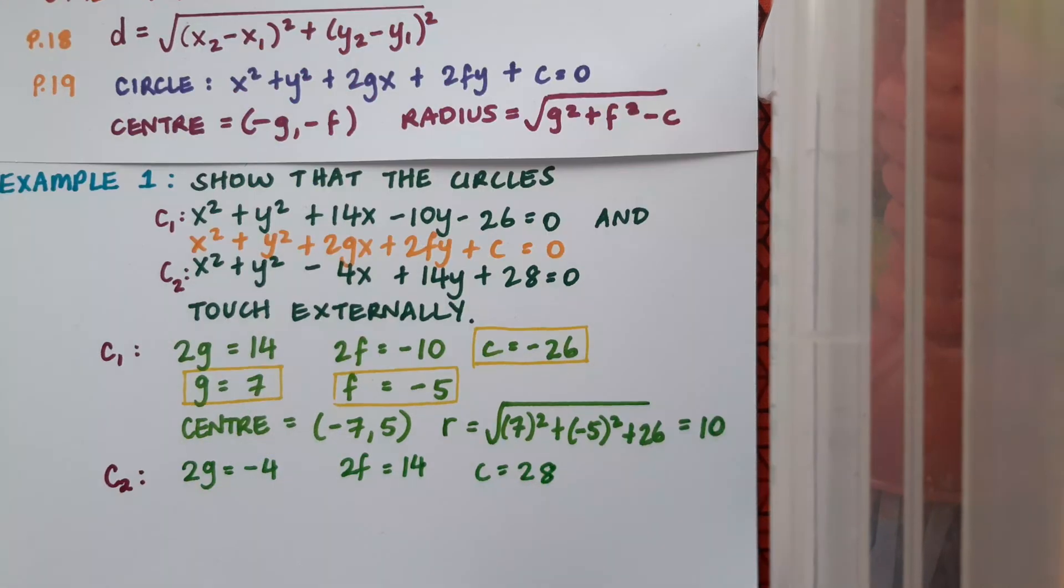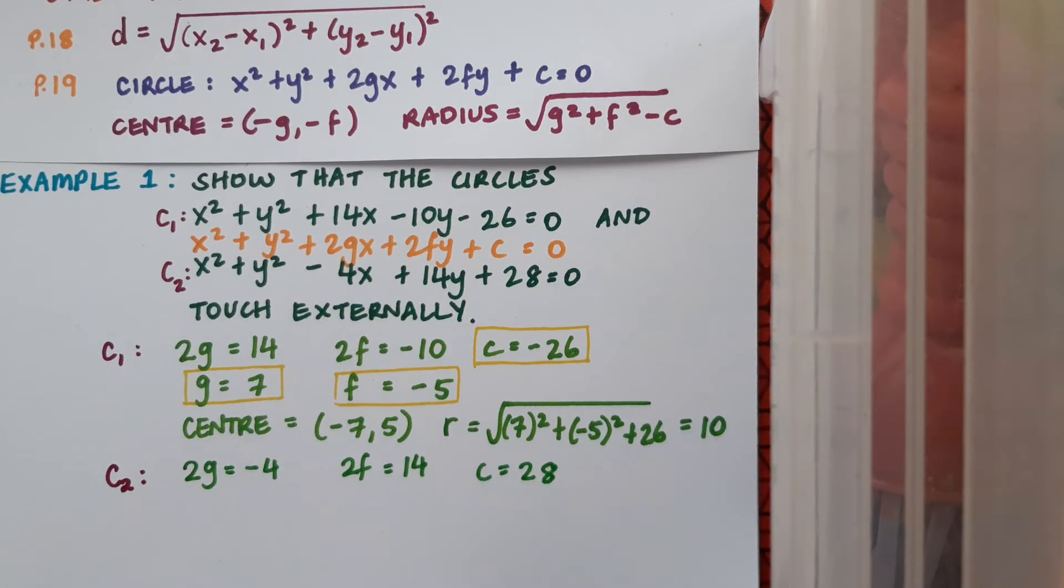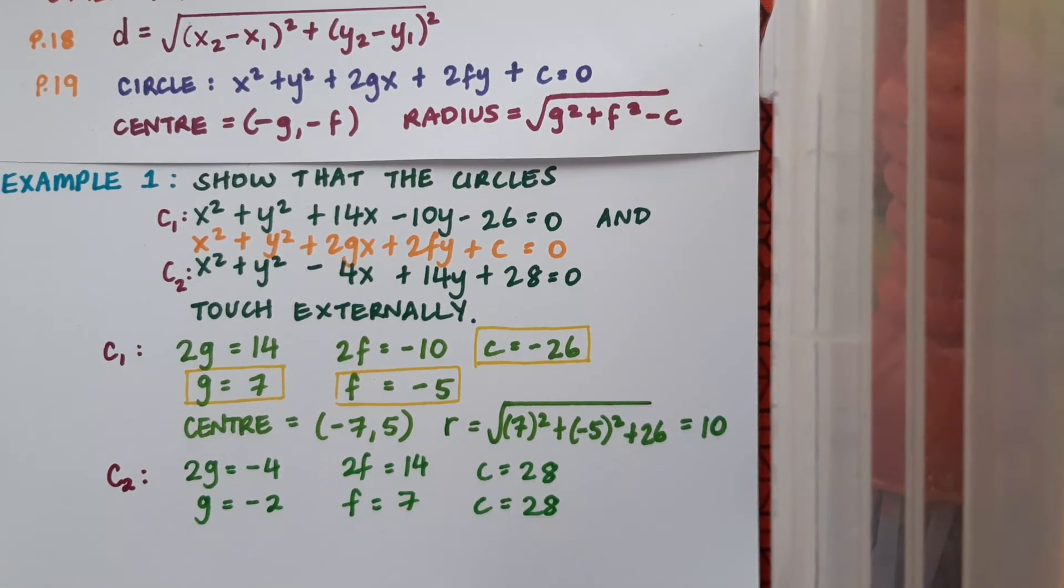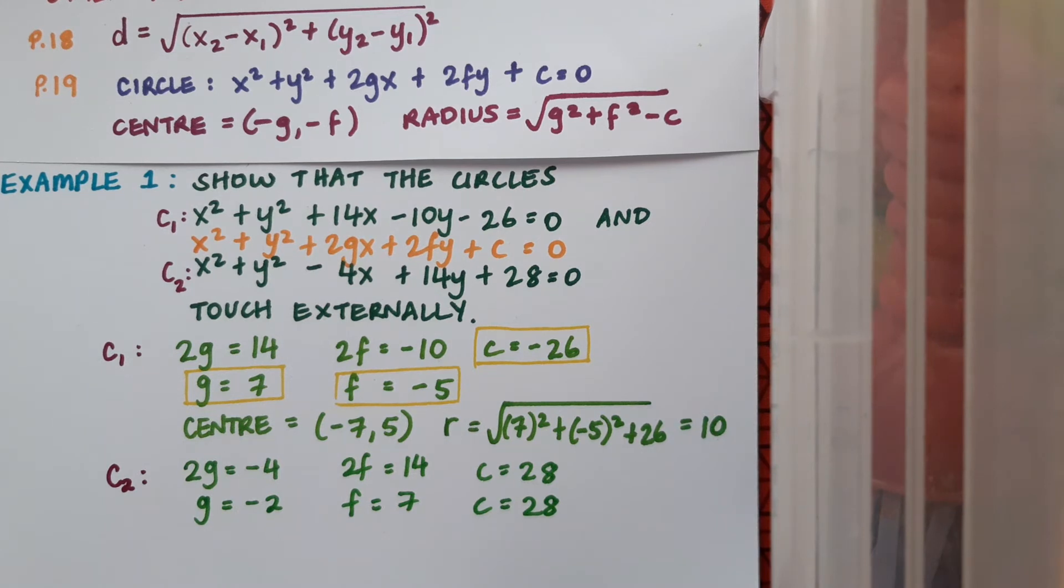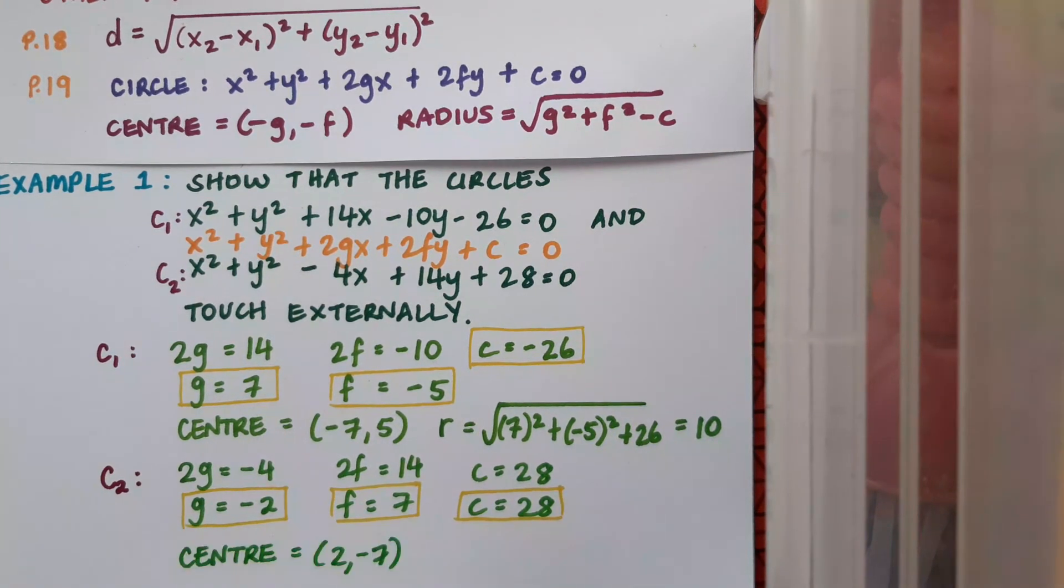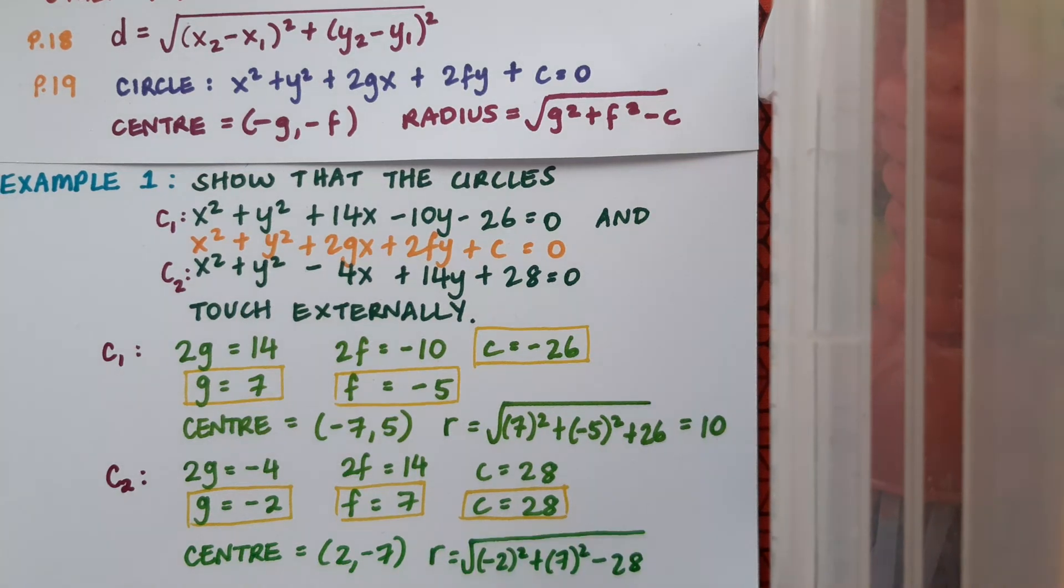Now for my second circle I'm noting my 2g, my 2f and my c. g is minus 2, f is 7 and c is 28. So this time my centre is 2 minus 7 and filling in for my radius I get 5.